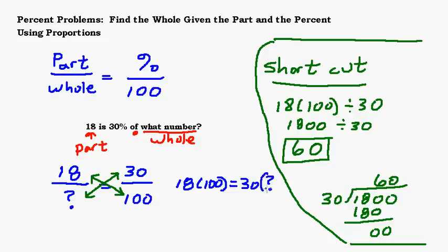I'm using parentheses here to mean multiplication. When you have a number and you want to talk about multiplying it, if you put the 18 right next to these parentheses, it means multiplication. So this is 1800 equals 30 times some number. In order to figure out what that number is, you're going to need to divide. How many times does 30 go into 1800? We just did that, and that answer was 60.